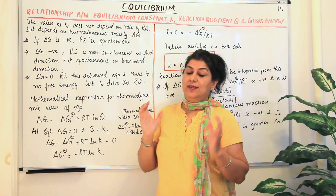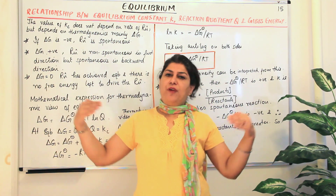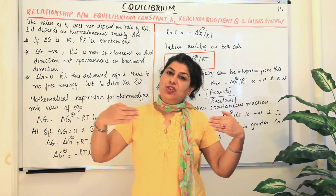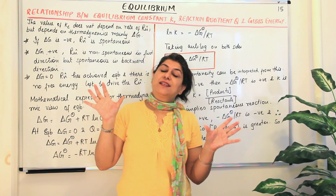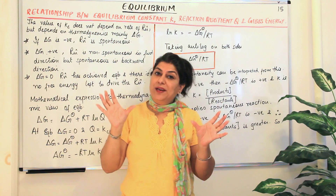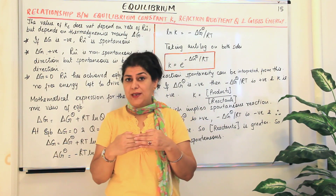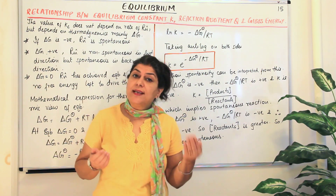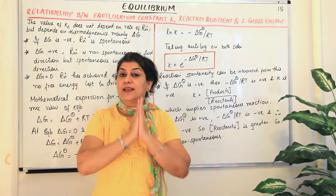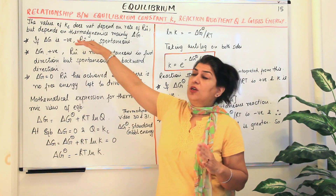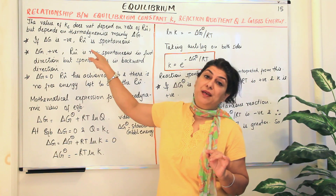The value of Kc, or equilibrium constant, does not depend on the rate of the reaction. A reaction may be fast or slow in the forward and backward direction. Once it attains equilibrium, the concentrations of the reactants and products become constant, and the equilibrium constant is calculated from those concentrations. Equilibrium constant does not depend on the rate at which equilibrium was established, but it does depend on the thermodynamics of the reaction.